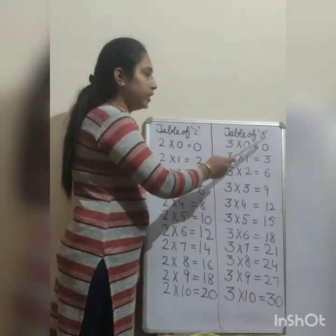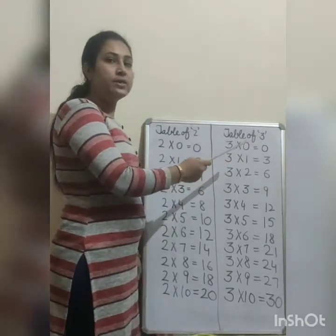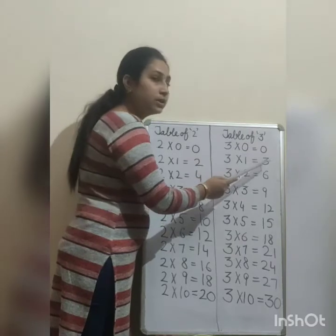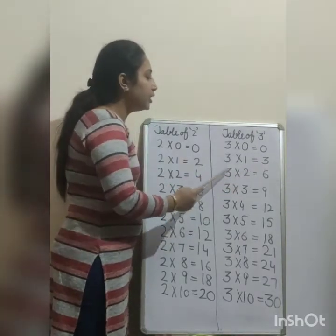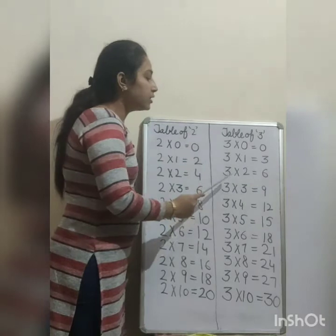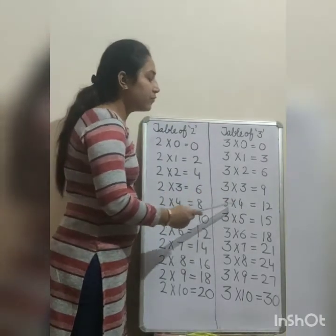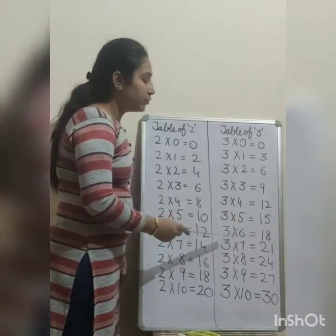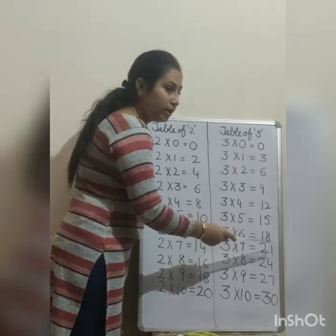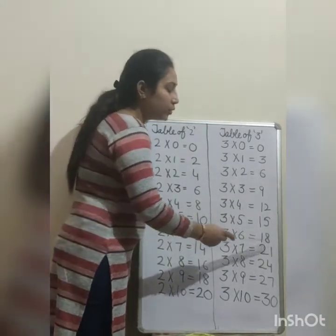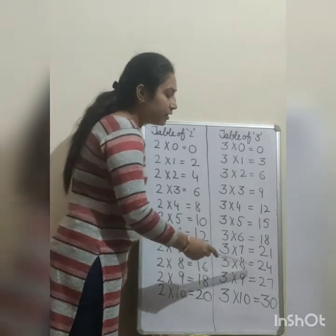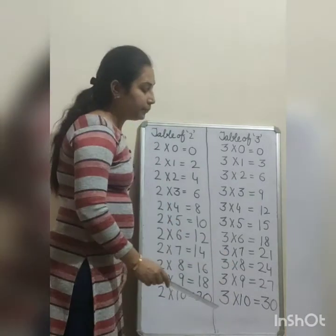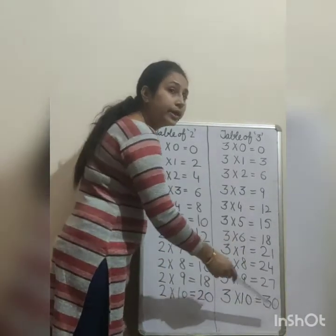Table of 3. Look at the board everybody and let's learn it carefully. 3 zeros are 0, 3 ones are 3, 3 twos are 6, 3 threes are 9, 3 fours are 12, 3 fives are 15, 3 sixes are 18, 3 sevens are 21, 3 eights are 24, 3 nines are 27, 3 tens are 30.